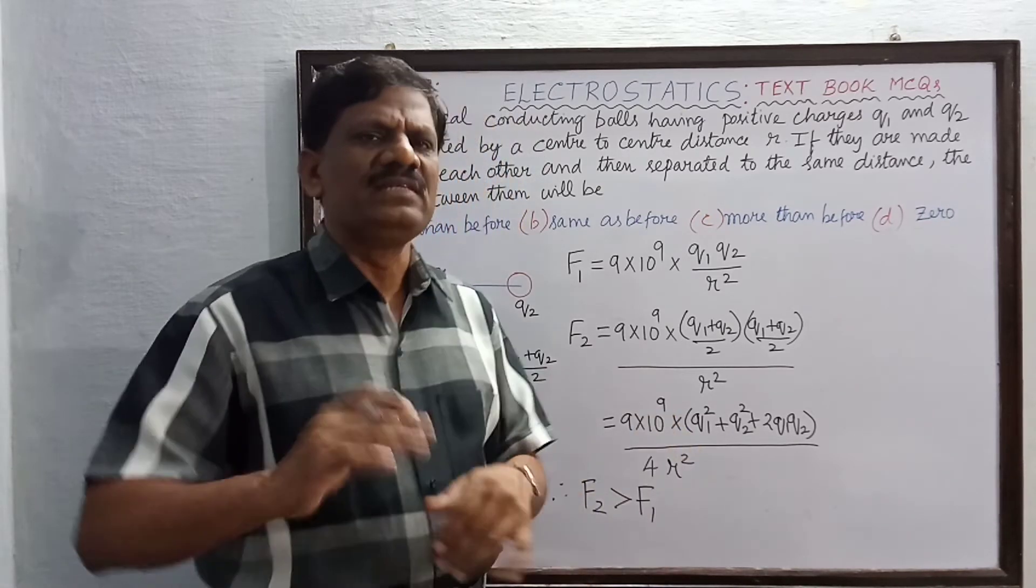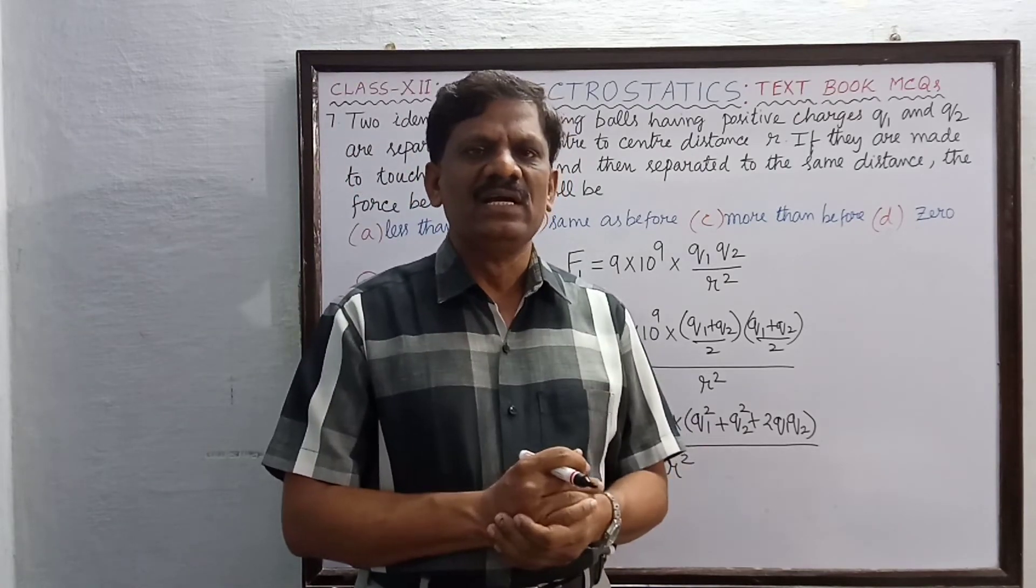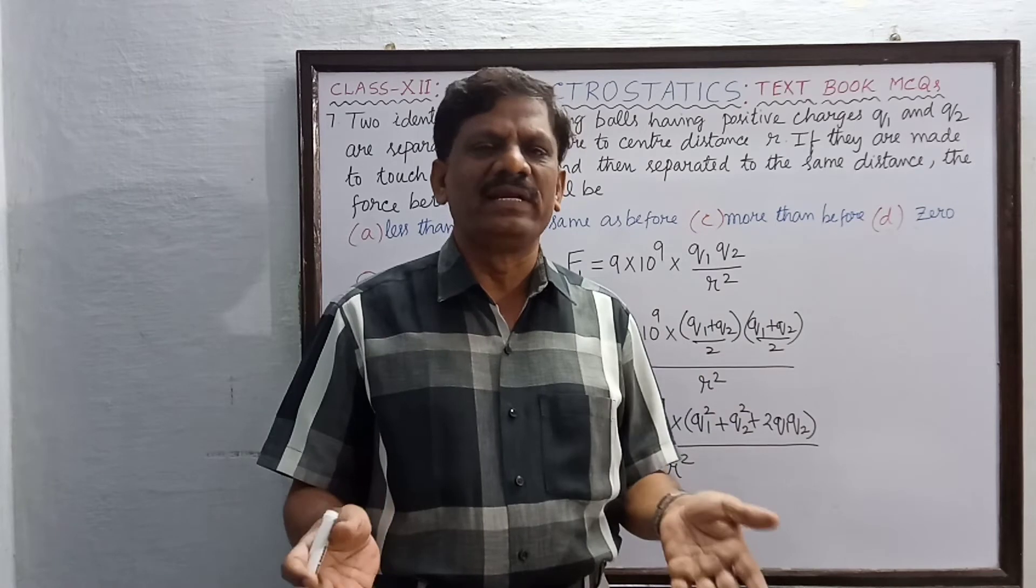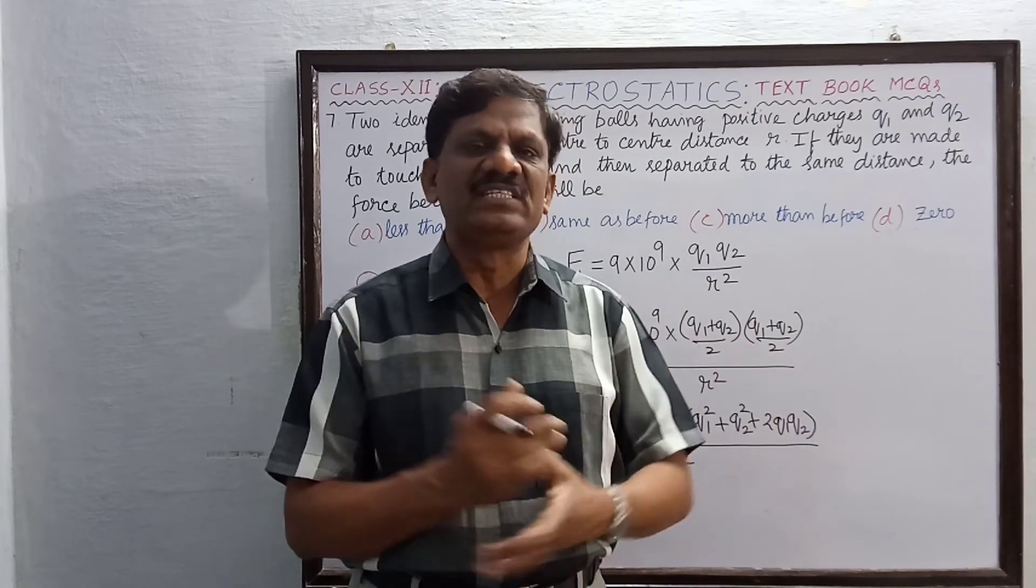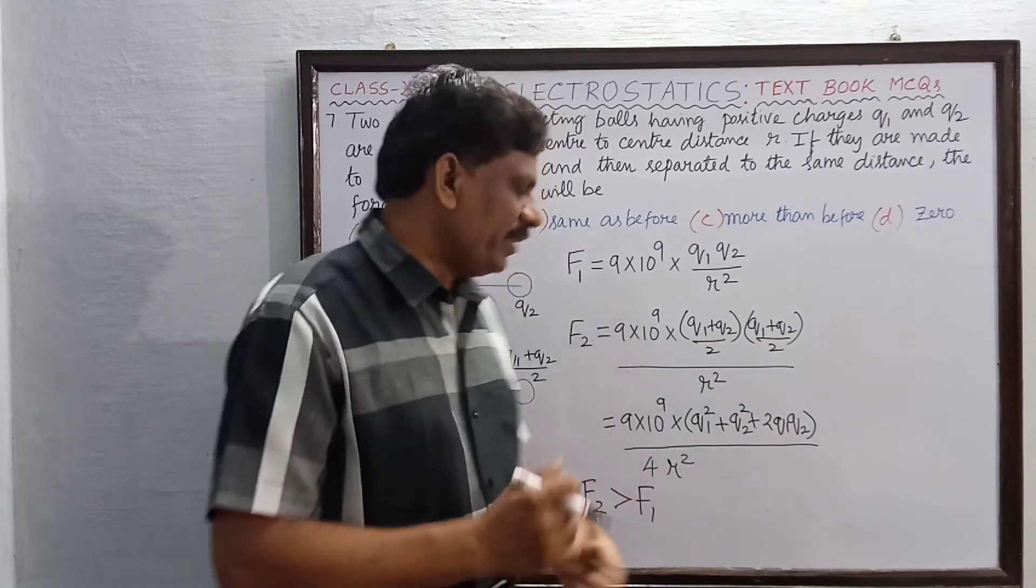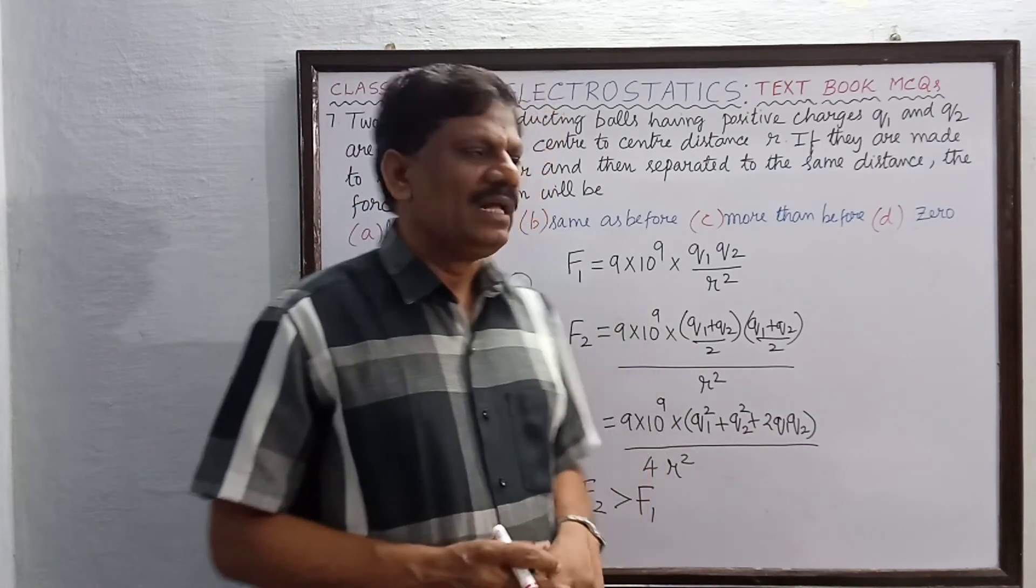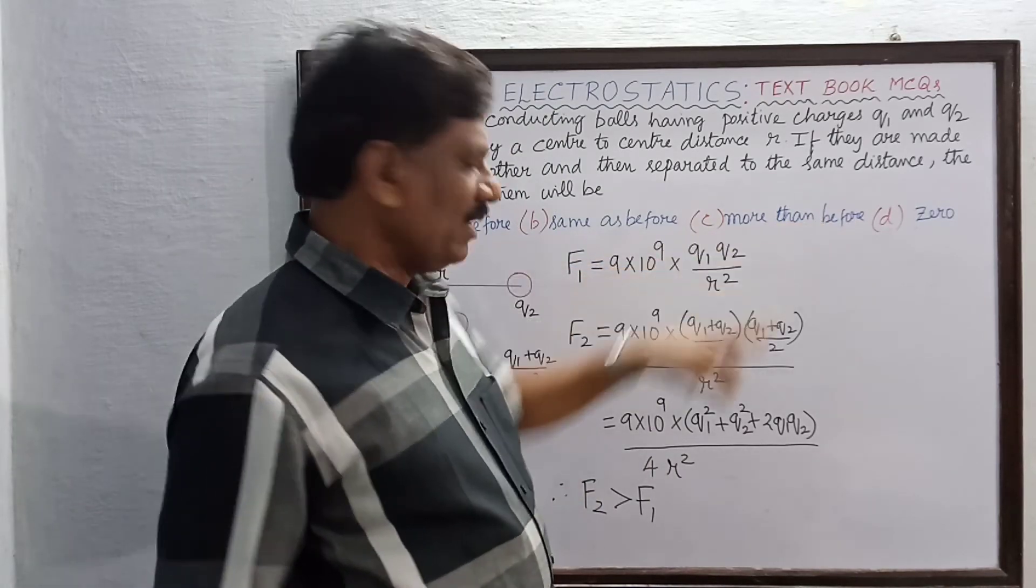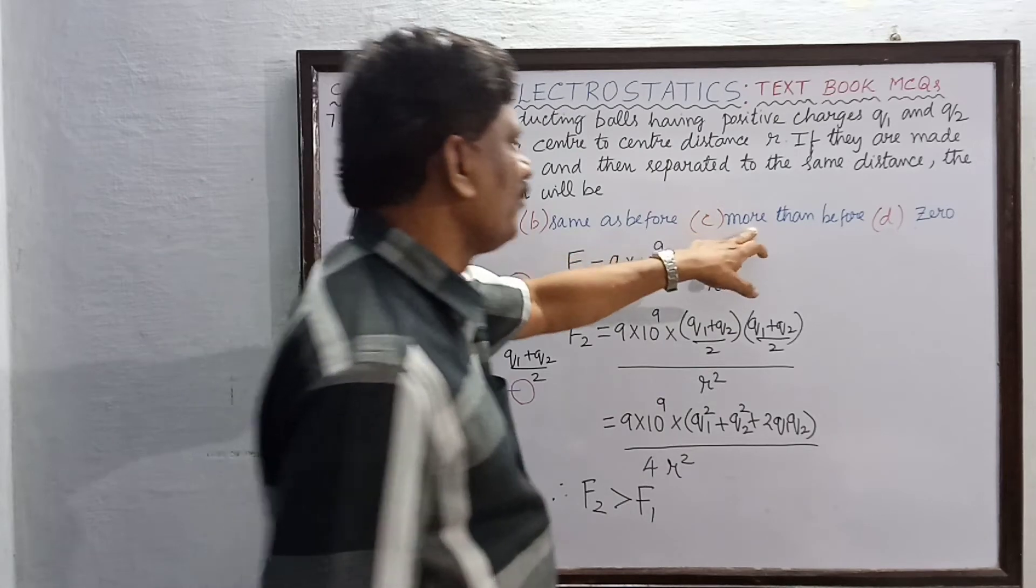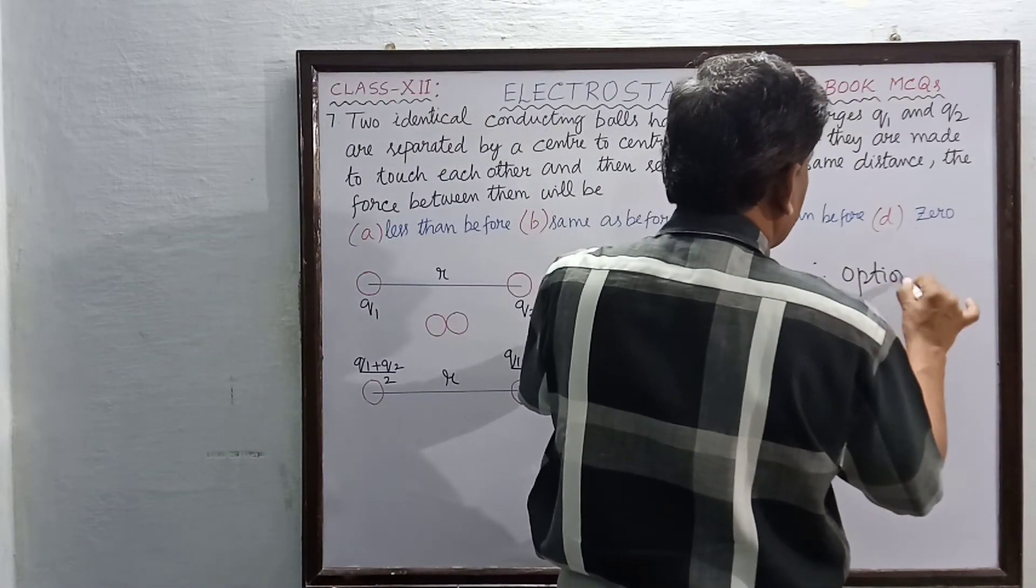When q1 is not equal to q2, when q1 and q2 are different charges, unequal charges, F2 is found to be always greater than F1. The force after touching is more than before. F2 is greater than F1. Therefore, option C is the correct answer.